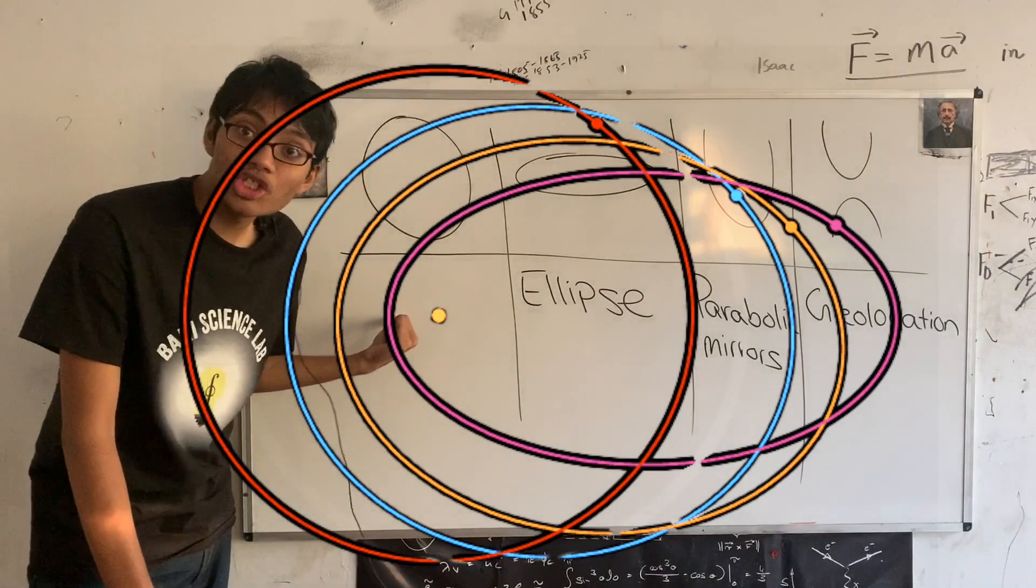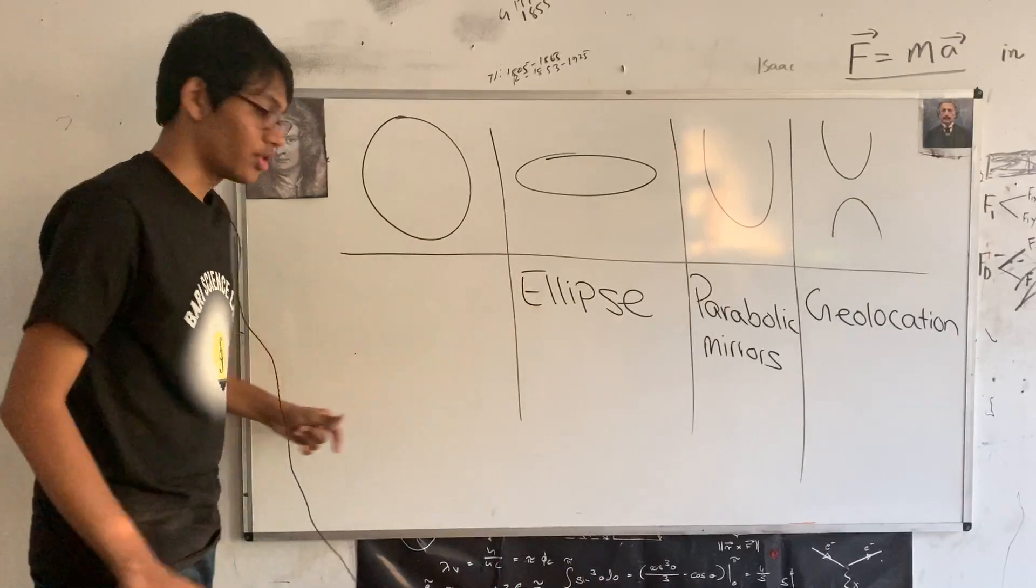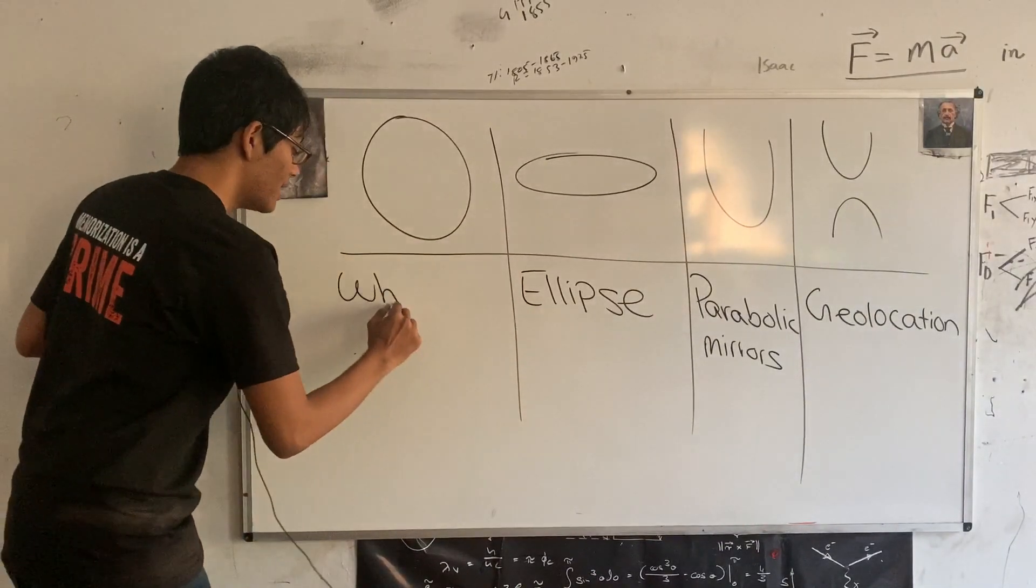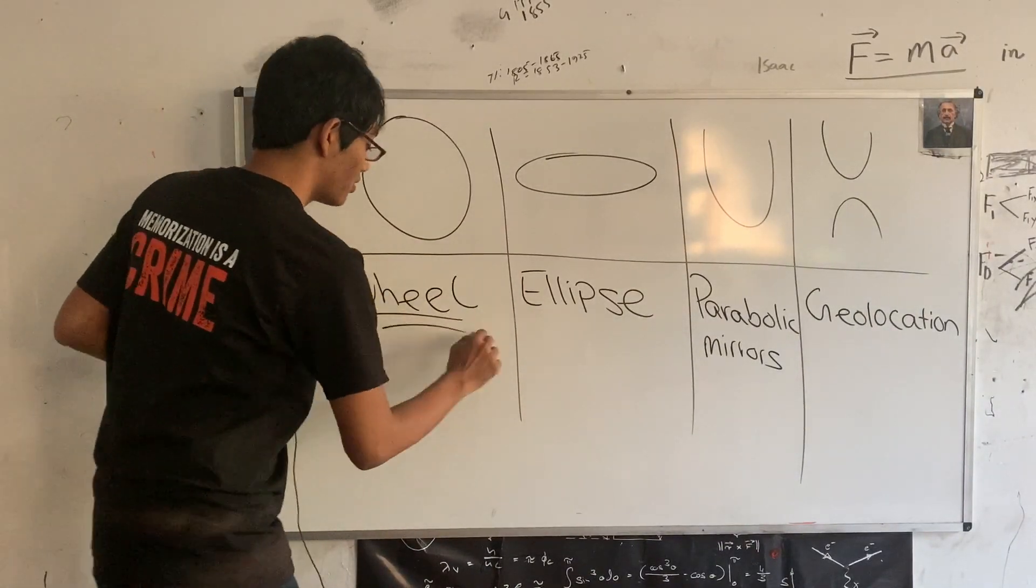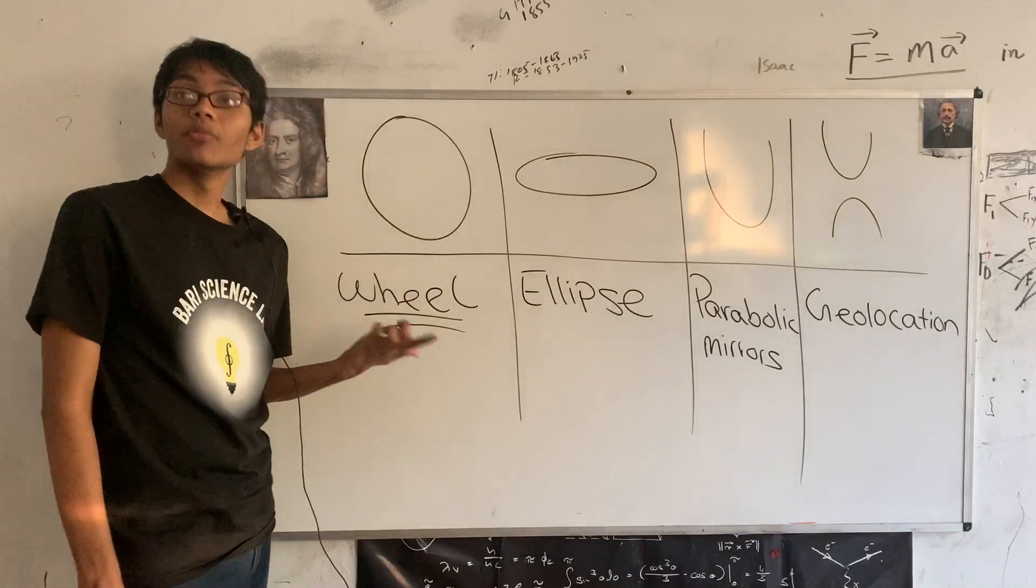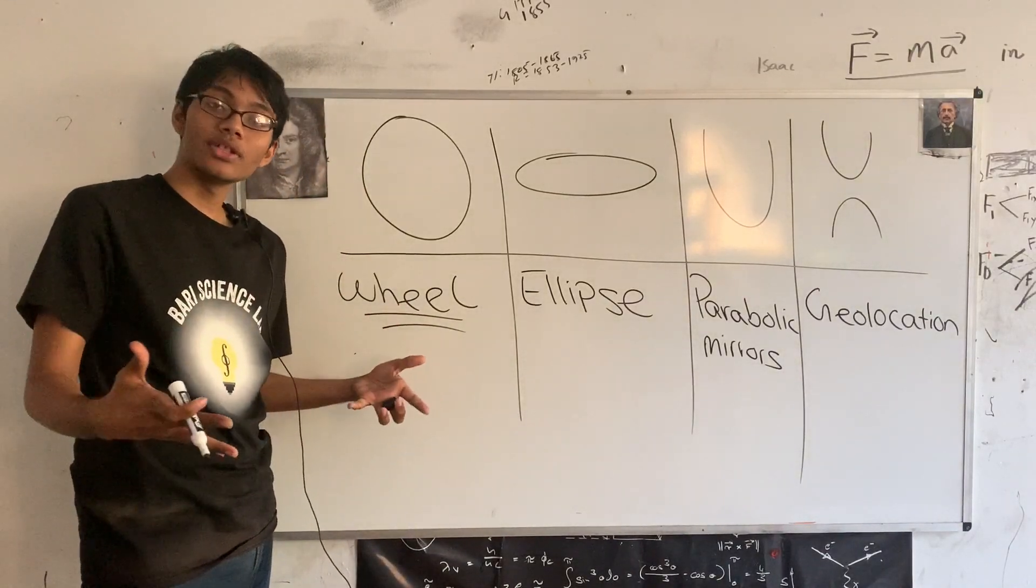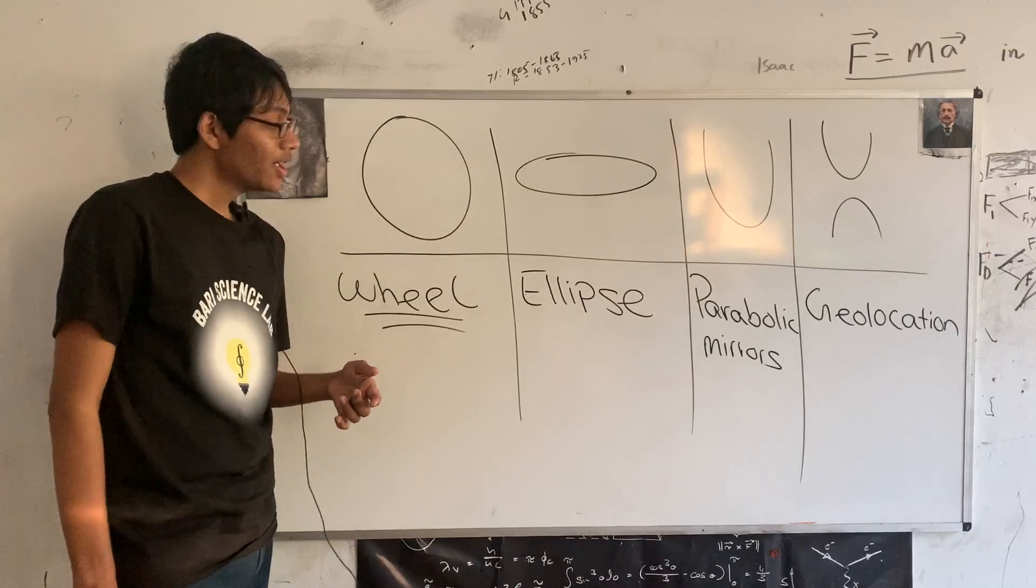And of course the circle, right? The humble, the famous, the circle, okay? The circle is used everywhere, namely of course the wheel, right? But hopefully I don't need to give you more examples of how the circle is used in our everyday life. Okay?